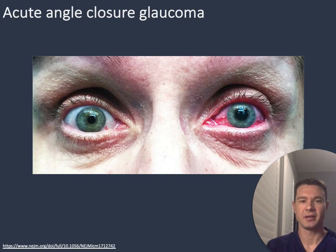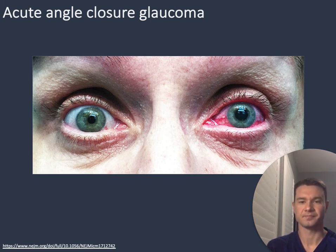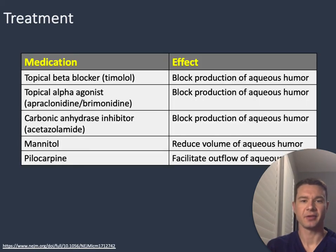In this picture, you can see the hallmark findings of acute angle closure glaucoma. The conjunctival vessels are dilated, especially near the cornea — referred to as ciliary flush. Additionally, the cornea is slightly hazy and the pupil is in a mid-fixed position. Treatment includes multiple medications aimed at blocking aqueous humor production, such as topical beta blockers, topical alpha agonists, and carbonic anhydrase inhibitors. Mannitol reduces the volume of aqueous humor, while pilocarpine facilitates its flow.